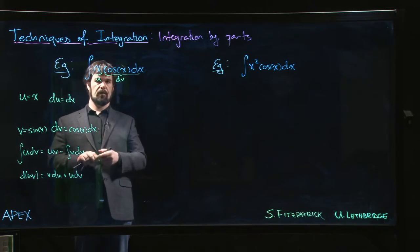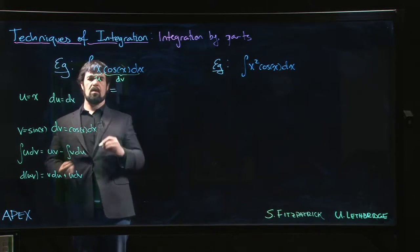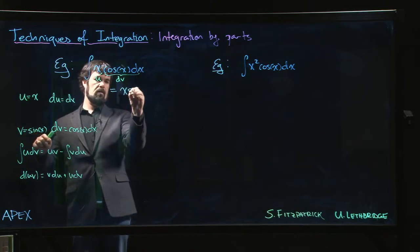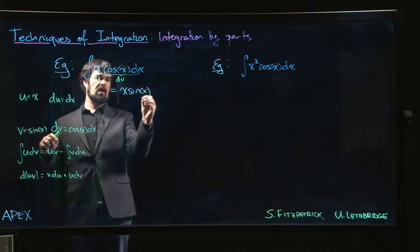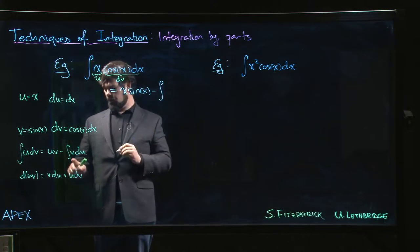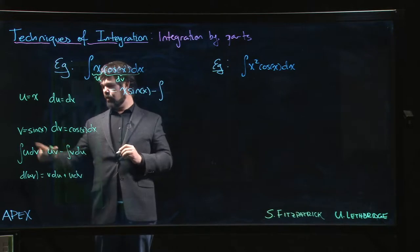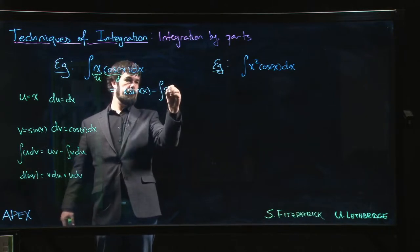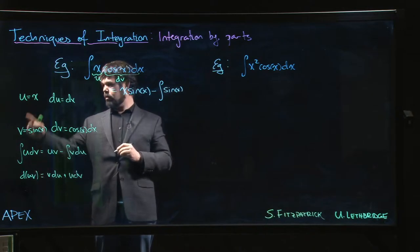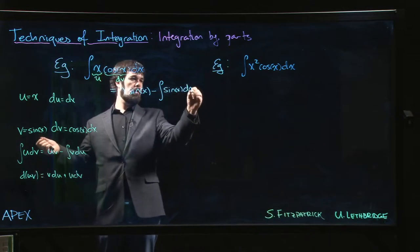So we write it all out. This becomes u times v, u times v, x times sine x minus the integral of v du. So v is here, sine x, du is just dx.